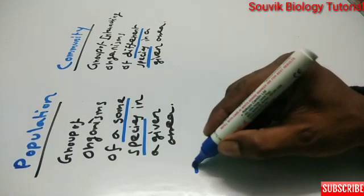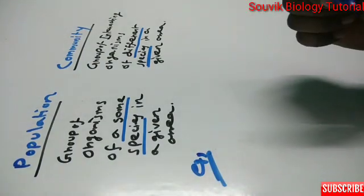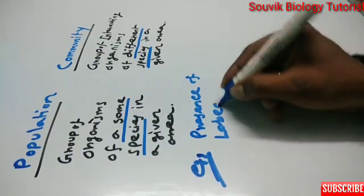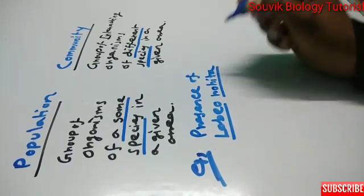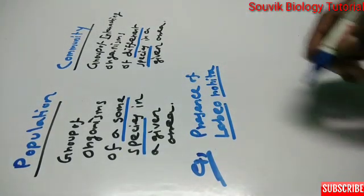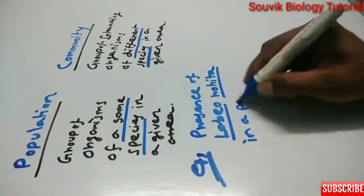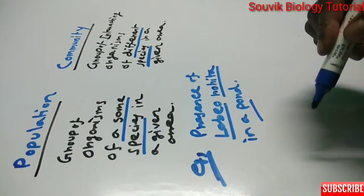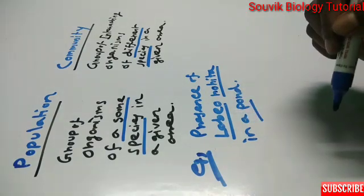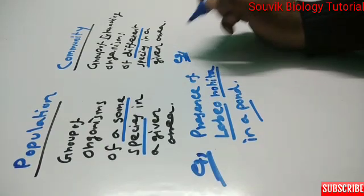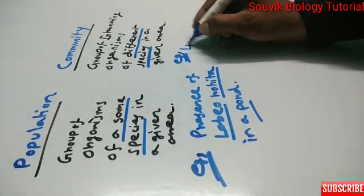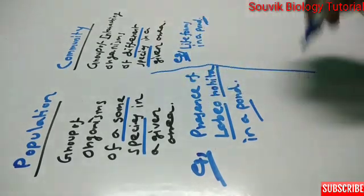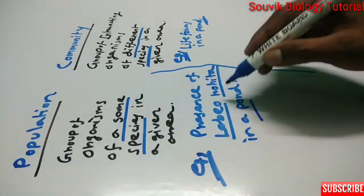Now for examples — the presence of Labio rohita, which is a common fish, in a pond. How many Labio rohita are present in a particular pond — that is a population of Labio rohita. That is an example of population.